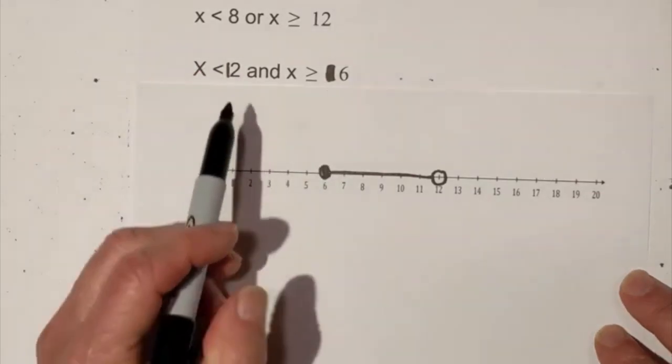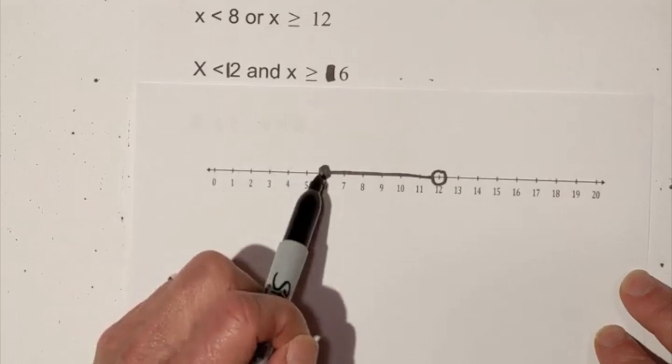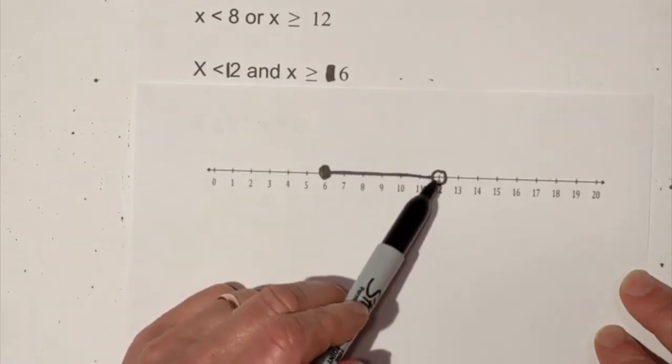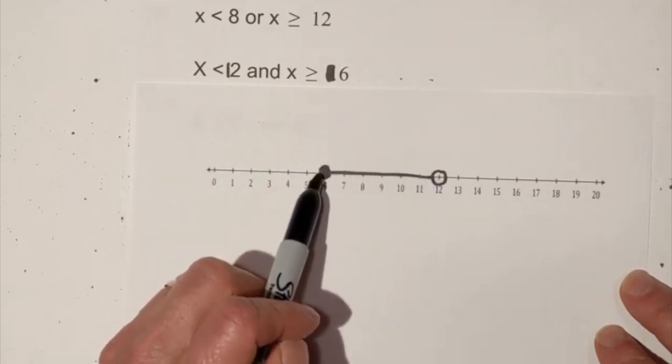So that's going to look like this. So if you'll notice it's got to be AND so it's got to meet both of these qualifications, so it is less than 12 and greater than or equal to 6.